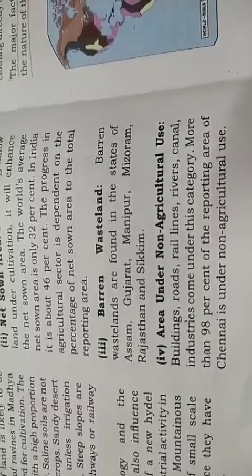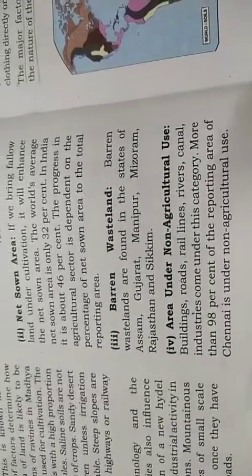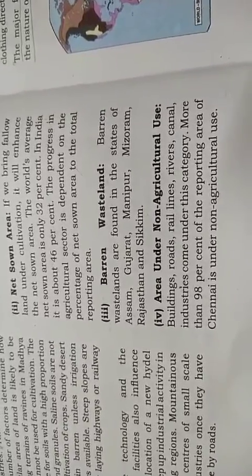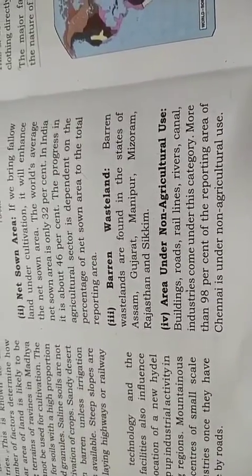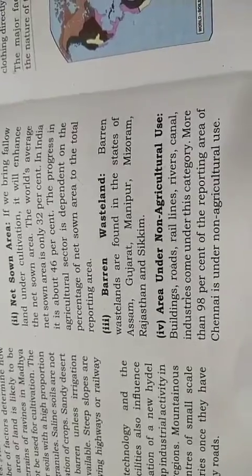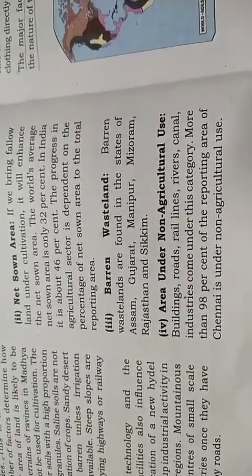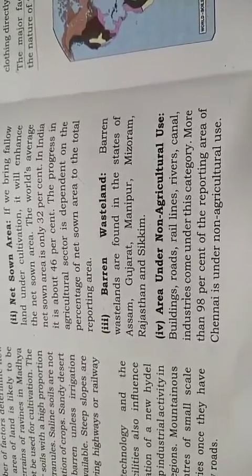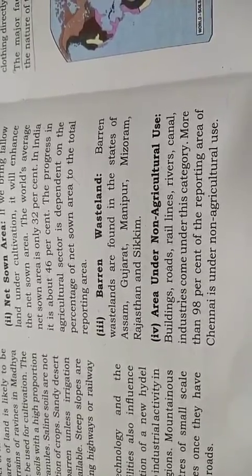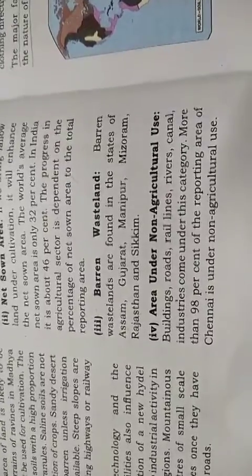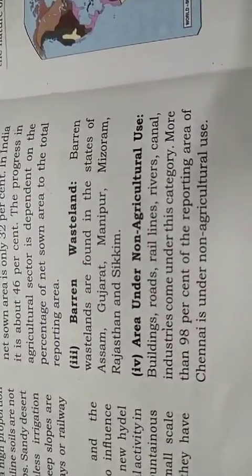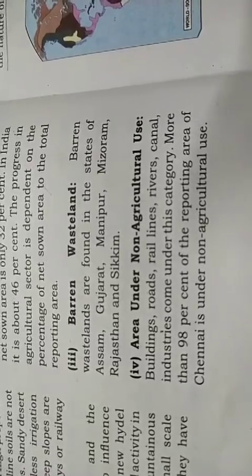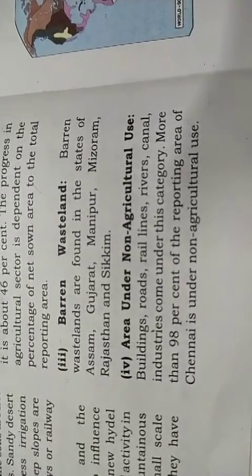Area under non-agriculture use includes land that is used but not for farming — for example, buildings, roads, rail lines, rivers, canals, and industries. More than 98% of the reporting area of Chennai is under non-agriculture use. Buildings, roads, rail lines, rivers, canals, and quarries all come under this category.